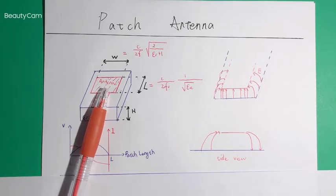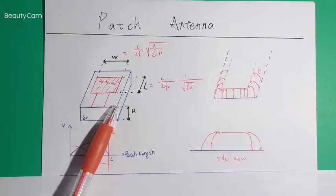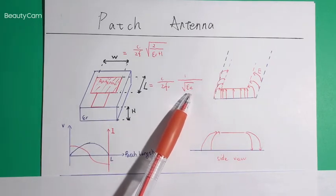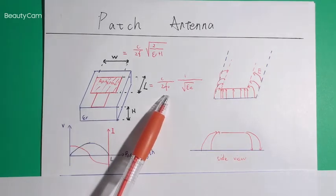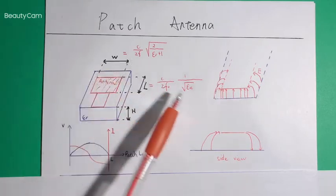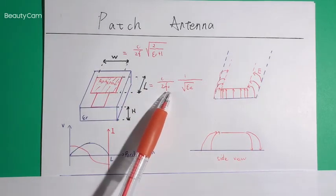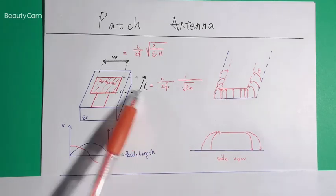When you design a microstrip line, you've already noticed the copper width will change the effective permittivity of the structure. When we want to calculate the guided wavelength, we should use the effective permittivity, not the permittivity of the substrate. So once we know the width and the effective permittivity, and the working frequency, we can decide what the length should be.